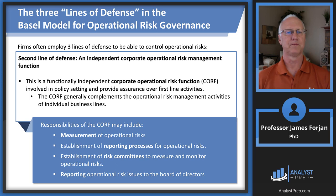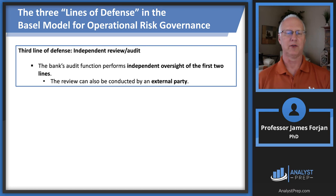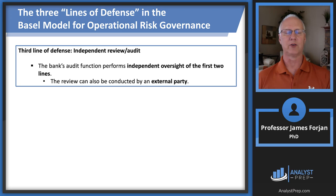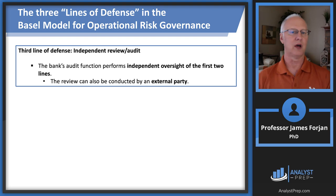The third line of defense is probably what you might expect. We have all these silos and we have the umbrella, but then we need somebody to come in and say: what have you guys been telling us you're doing? Let's make sure you've actually been doing that. So we can have an internal audit or this review done by an external party — it's important to compare what we expected to do with what we actually did.